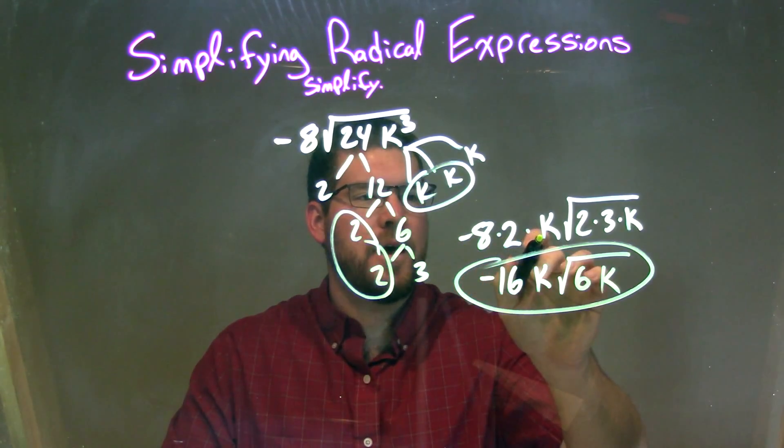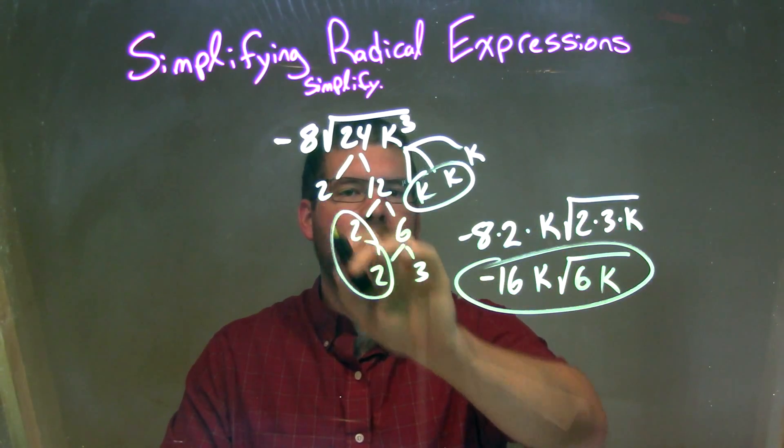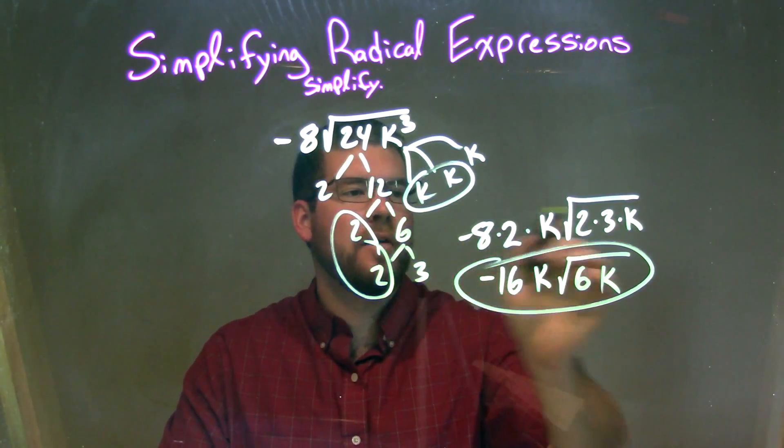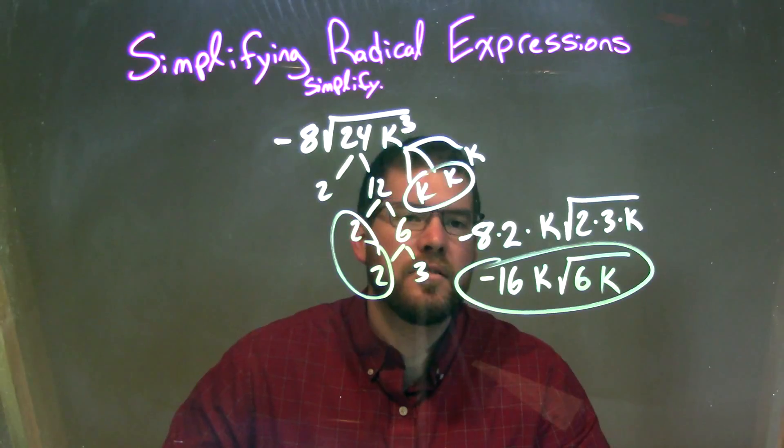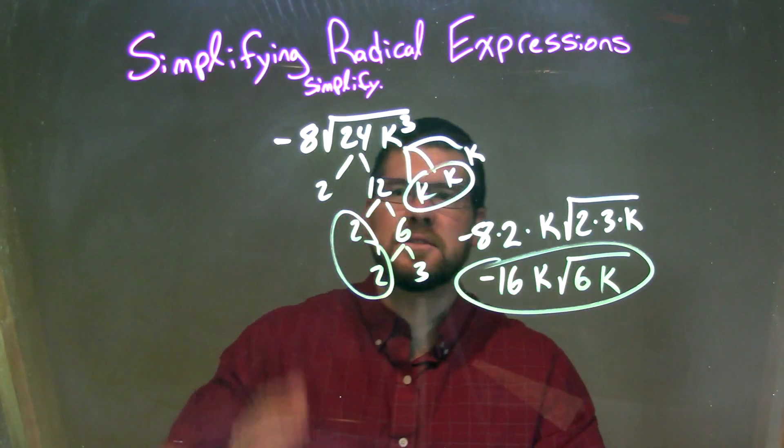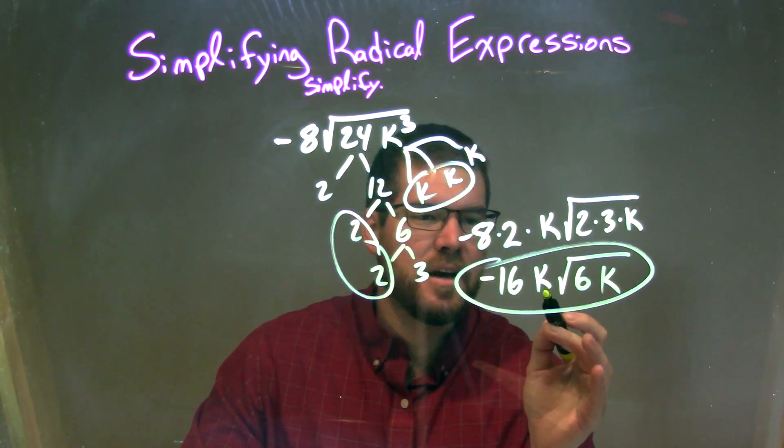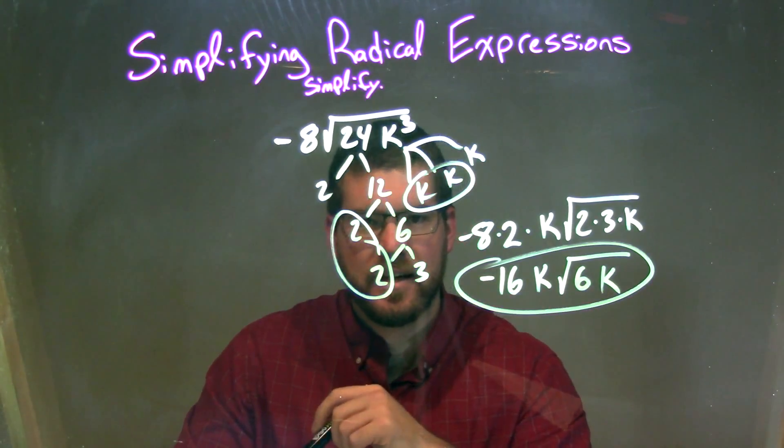So we have negative 8 times 2 times k, times the square root of all that weren't paired up, 2 times 3 times k. Simplify that to get our final answer, which is negative 16k times the square root of 6k.